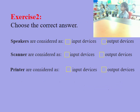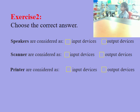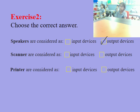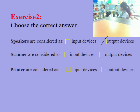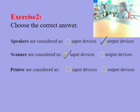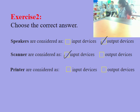Exercise number two: Choose the correct answer. Speakers are considered output devices. Scanners are considered input devices. Printers are considered output devices.